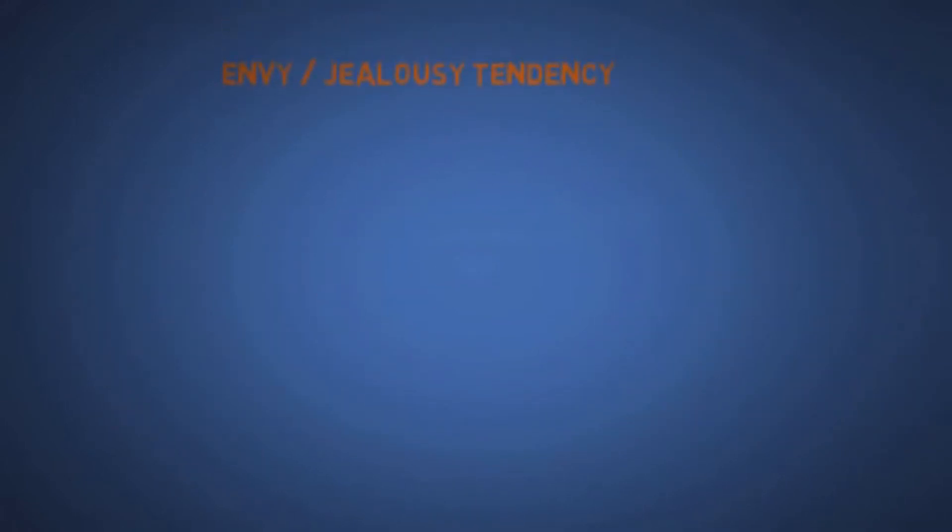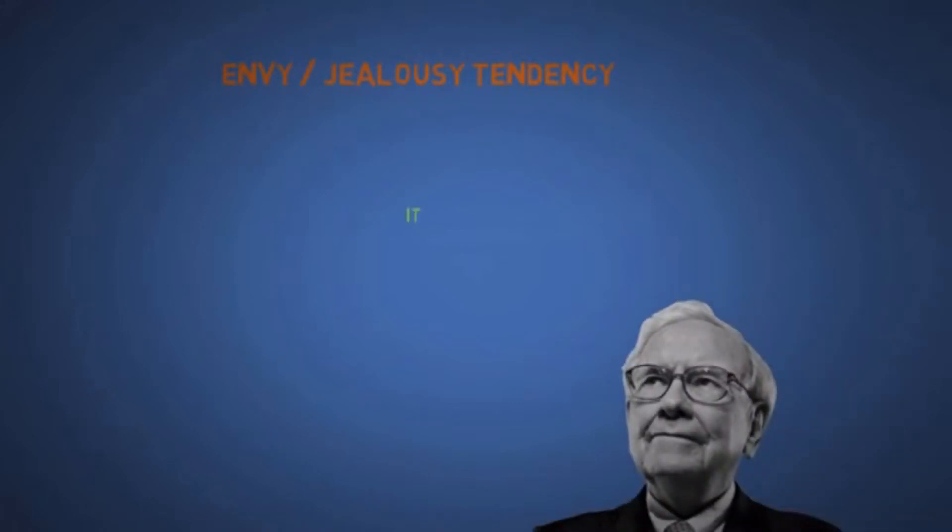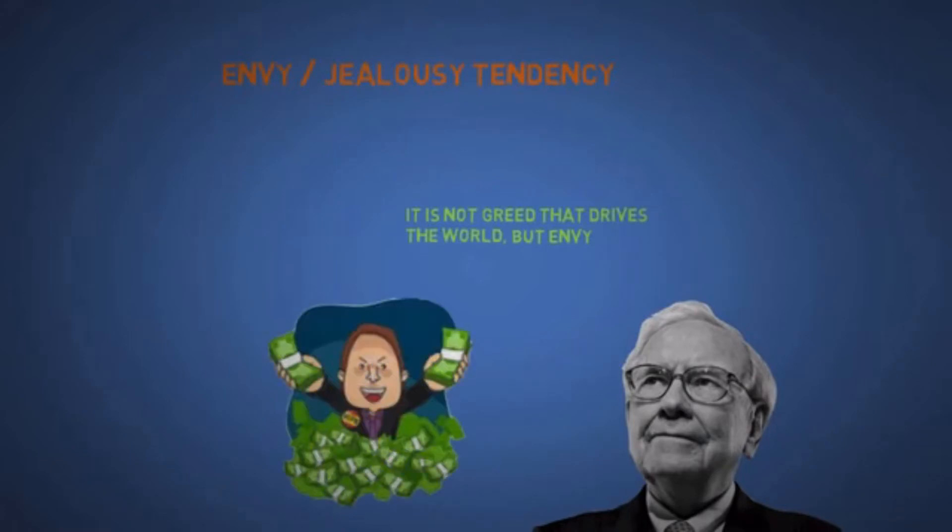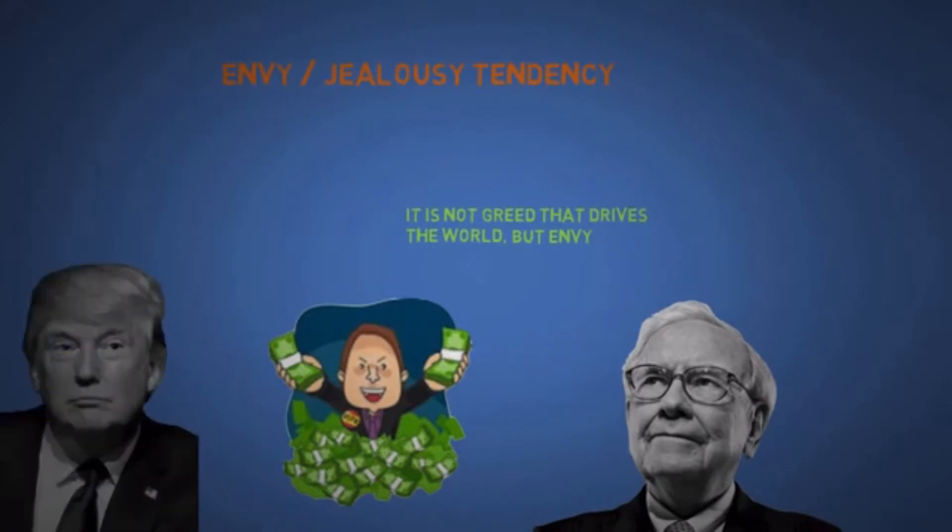The eighth is envy slash jealousy. This is self-explanatory. Warren Buffett says it is not greed that drives the world, but envy. So be careful with this one, as showing off too much might make people dislike you. Like this is one of the reasons some people don't like Donald Trump.